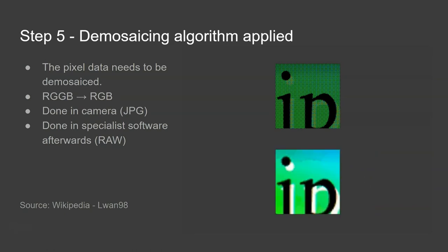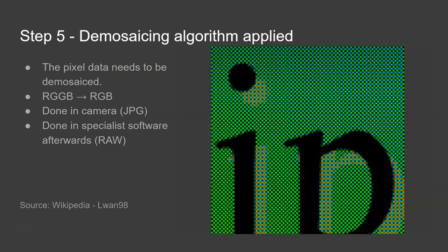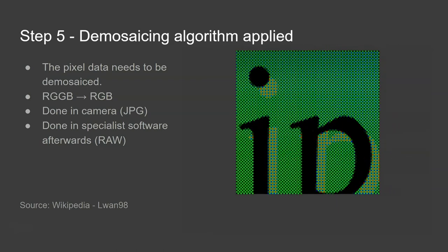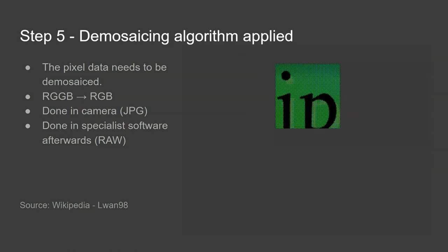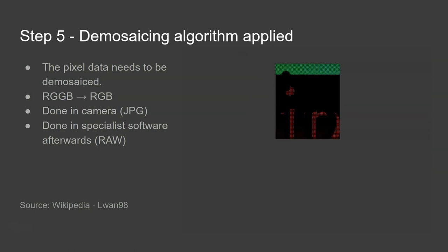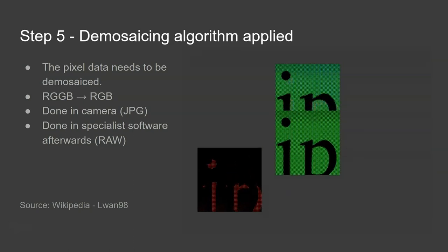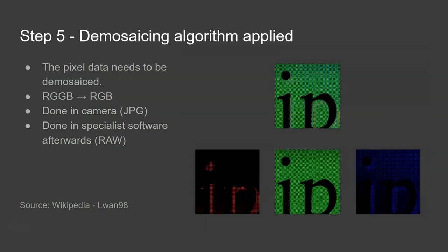With a digital camera if you set it to JPEG mode when you're taking photos then that demosaicing will be done in camera. However if you set your camera to raw mode then it will just save each of the separate RGGB data into a raw file and then you can use image editing software on your computer itself to do that conversion.